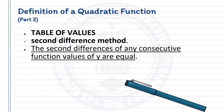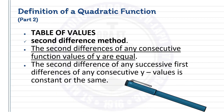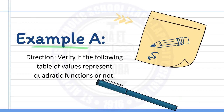The second difference of any consecutive function values of y are equal. The second difference of any successive first difference of any consecutive y values is constant or the same. Once you get the second difference of any successive first difference of the y values, and if it's the same, consistent, or constant, then it is a quadratic function.